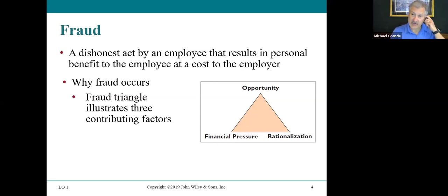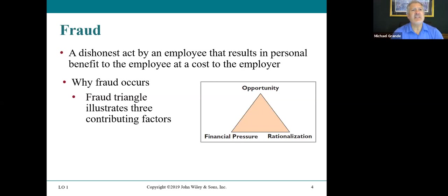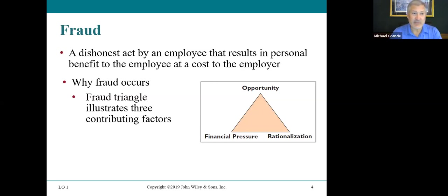Once individuals begin with academic dishonesty, it continues through college and may continue to graduate school. The real impact comes in the business world — people who committed academic larceny go to work for companies and they're going to continue to cheat. That cheating can come in many forms: falsifying information or simply stealing something. Fraud is a dishonest act by an employee that results in personal benefit to the employee at the cost of the employer.